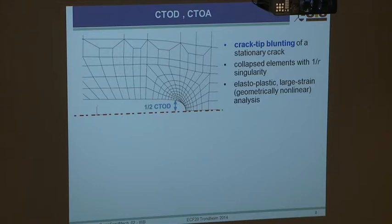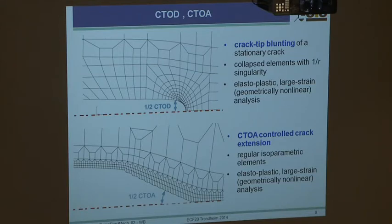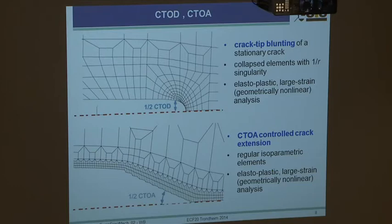In CTOA-controlled crack extension, the angle here is CTOA. The criterion - used in the aircraft panel industry - states that during stationary crack movement, CTOA remains constant. This can be applied in a crack growth analysis. Regular isoparametric elements and large strain analysis are used, and CTOA is half of the total angle.